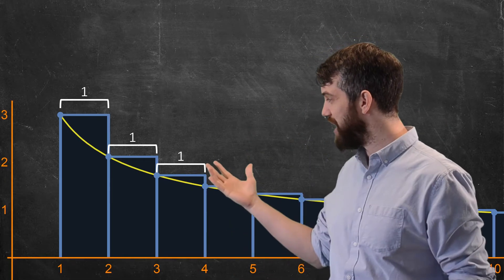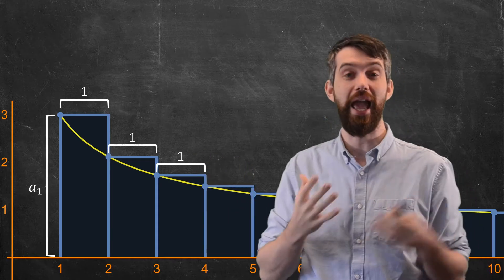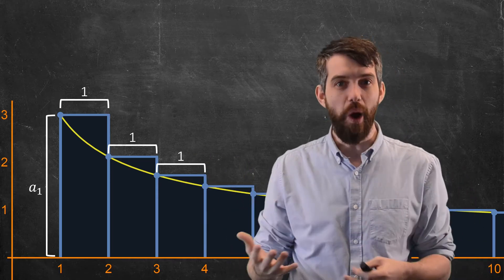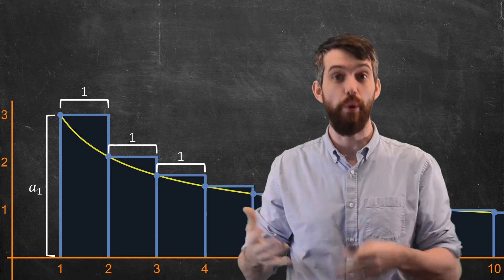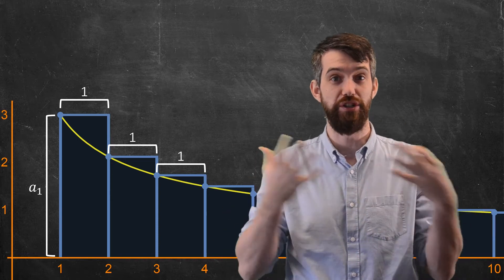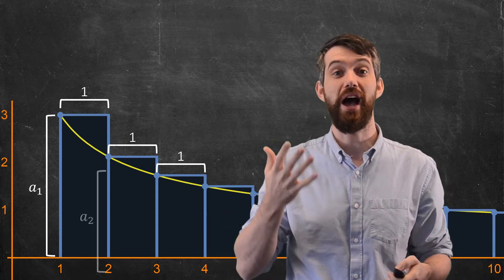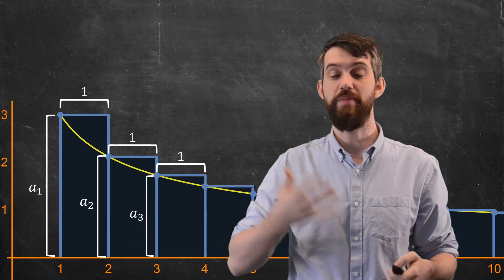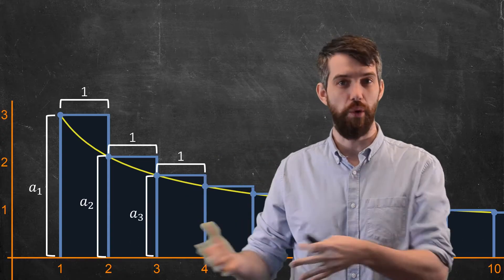So for the leftmost rectangle, its height is going to be just a₁. For the second one, its height is going to be the left endpoint on the second interval, the region 2 to 3. It's going to have a height of a₂. And then it's going to be a₃, a₄, and so on down the line.